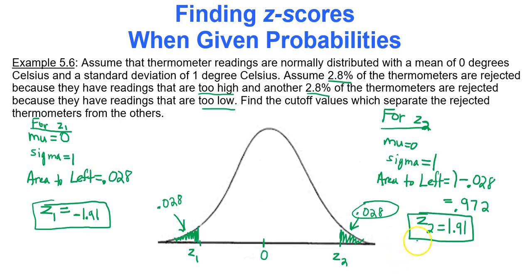And the reason why they are the same number, just one's positive, one's negative, is because our two tails on either side of the curve both had an area of 0.028, and then our mean of a standard normal distribution is 0. So because of that symmetry, that's why you have negative 1.91, positive 1.91, 0 in the middle, same area in both tails, the values will be opposites of each other.